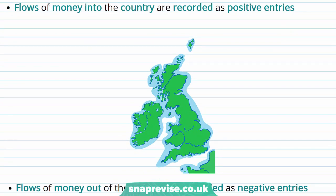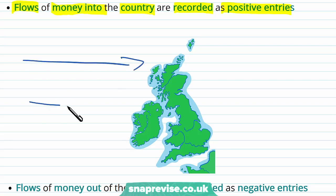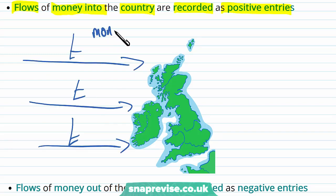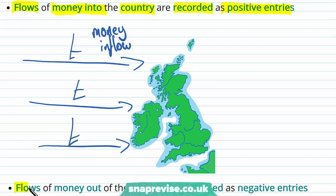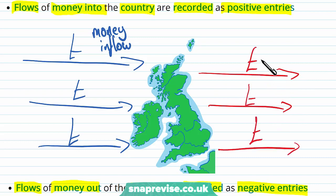There's a different way in which we can formalize these payments and what we're buying, and that's by talking about flows of money. Flows of money into the country are going to be recorded as positive entries. So when we are receiving payments, this is known as a money inflow — if we're selling something abroad and we're receiving money or a payment, then this is money flowing in. On the other hand, when we're buying things, these are called flows of money out of the country and are recorded as negative entries, so when we are buying things abroad we'll be seeing our money flowing out — a money outflow.